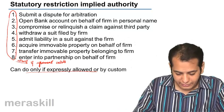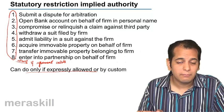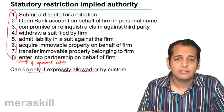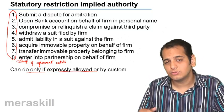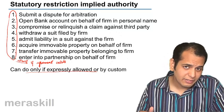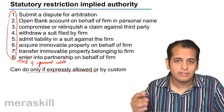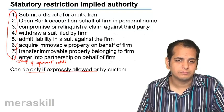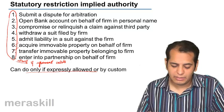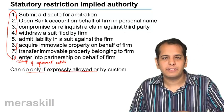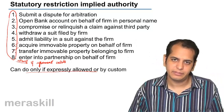So if the partners agree, one partner may be allowed to submit a dispute for arbitration, but that has to be agreed by the partners or put into the partnership deed. A partner may be allowed to open a bank account for the firm in his own name, but that has to be agreed by the partners and appear in the partnership deed. He may also be given the right to acquire or sell an immovable property on behalf of the firm, but that has to be by agreement of all the partners or it has to appear in the partnership deed. So all these restrictions can be nullified — undone — by an agreement or by expressly putting them in the partnership deed.